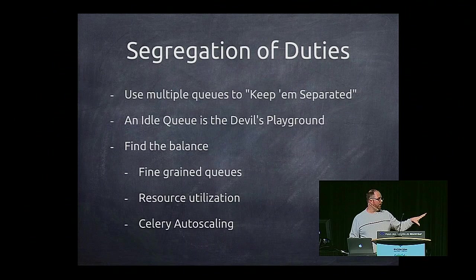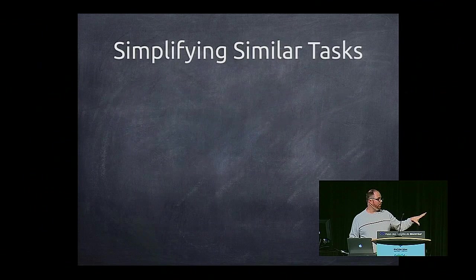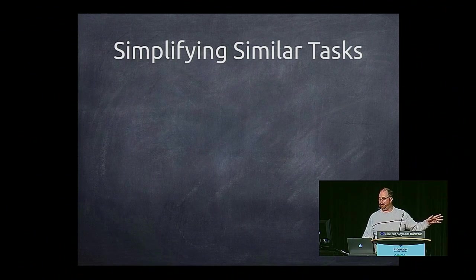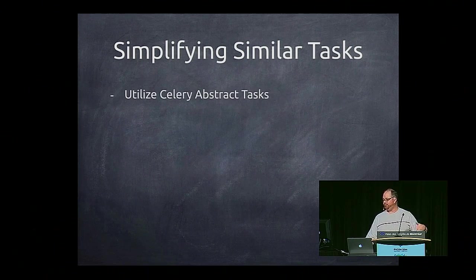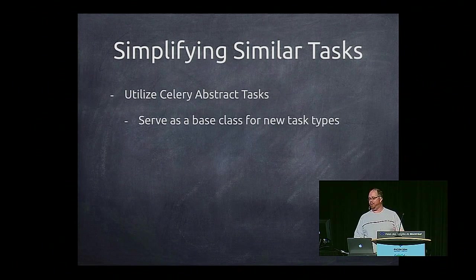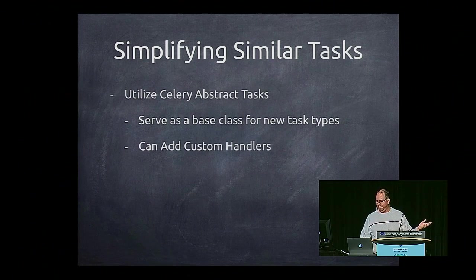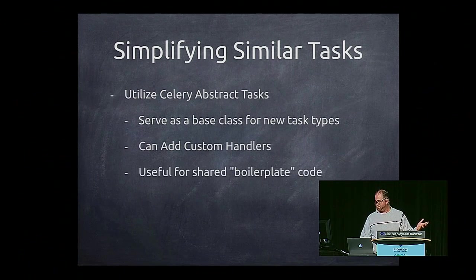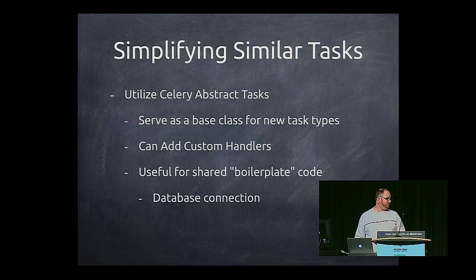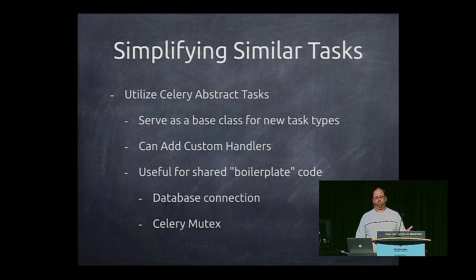Another simple way to get going is to simplify similar tasks. With Celery, we can utilize abstract tasks. It just serves as a base class for new task types, and you can add custom handlers to respond to events for similar types of tasks. It's useful for sharing boilerplate code, such as a database connection — and that's actually how I do my Celery mutex.